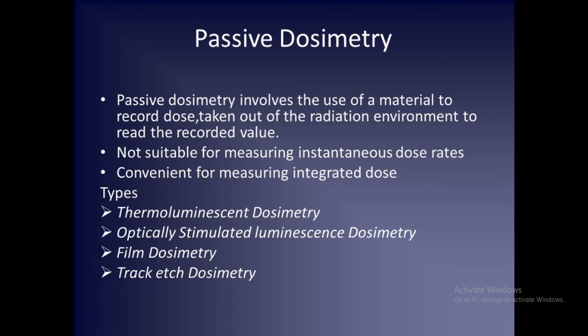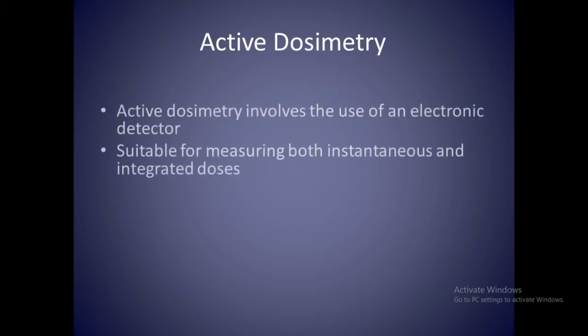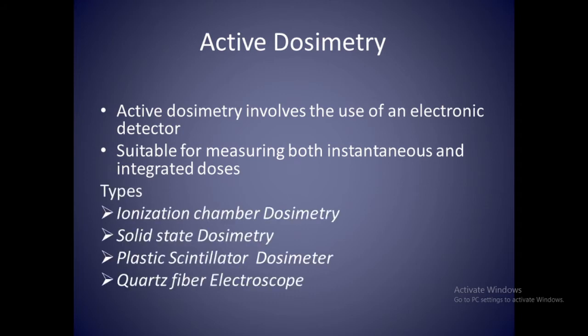Some of the commonly used passive dosimetry techniques include thermoluminescent dosimetry, optically stimulated luminescence dosimetry, film dosimetry, and track etch. Active dosimetry involves use of an electronic detector and is suitable for measuring both instantaneous and integrated doses. Commonly used active dosimetric systems include ionization chamber dosimetry, solid-state dosimetry, plastic scintillator dosimeter, and quartz fiber electroscope.